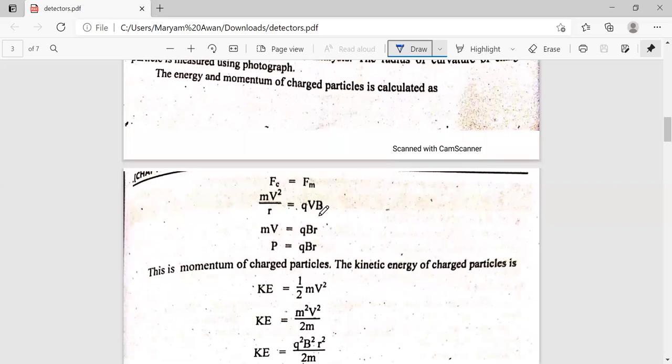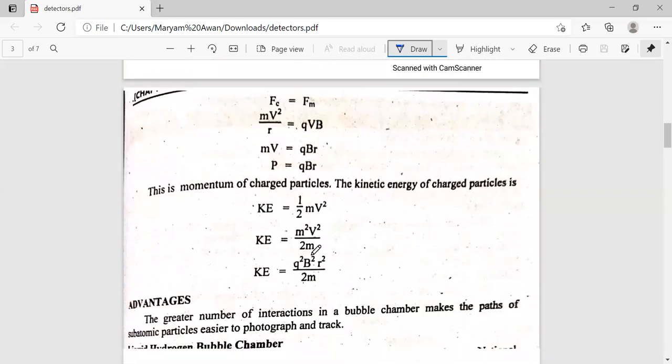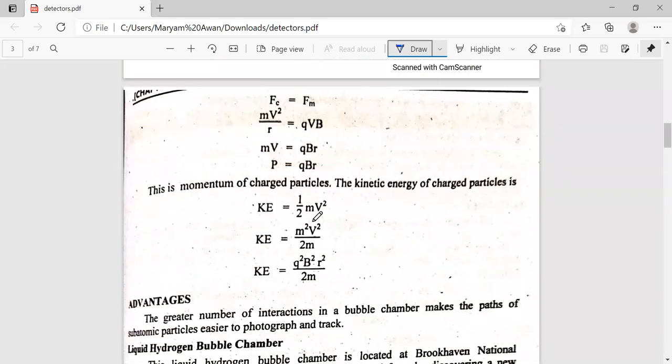The magnetic force equals the centripetal force: mv²/r = qvB, so mv = qBr and momentum is equal to qBr. Now, the charge q and magnetic field B are constant, and r depends on momentum. The kinetic energy is ½mv². Multiplying and dividing by m, we have KE = q²B²r²/2m.